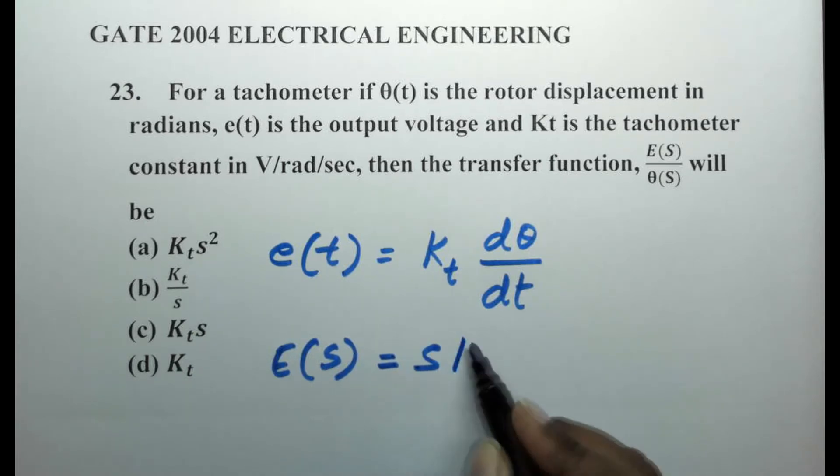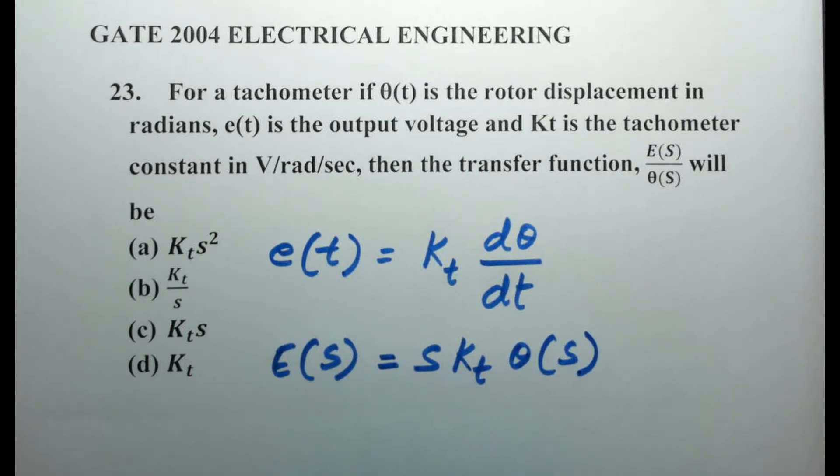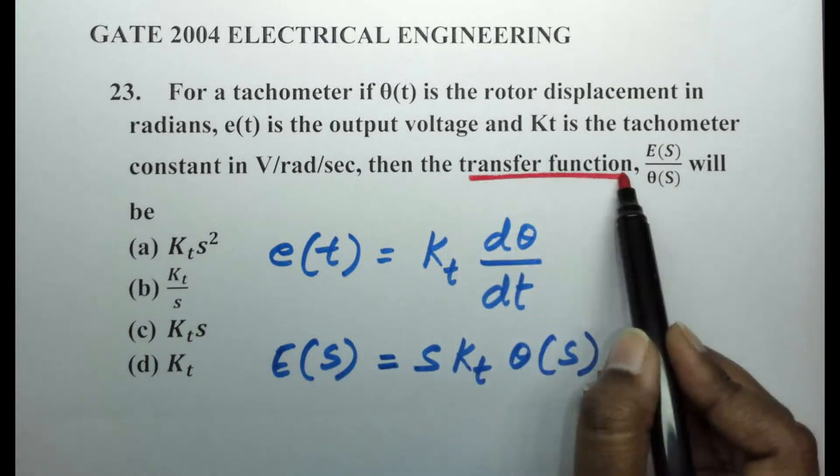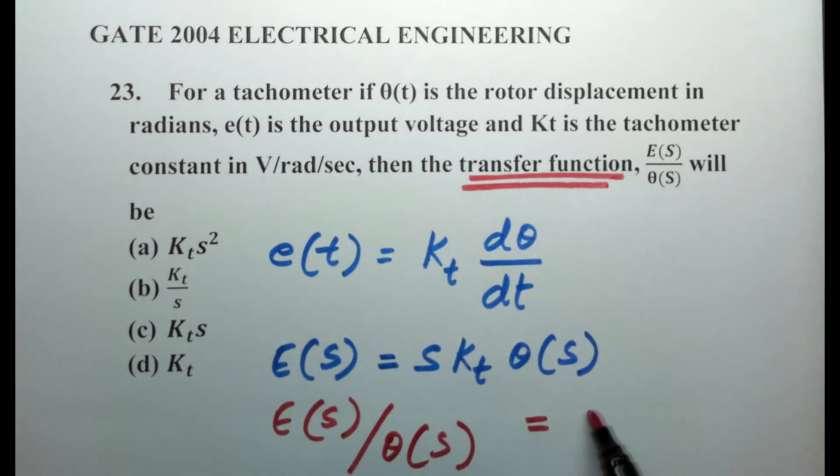Now the transfer function is in terms of e of s by theta of s. So this can be further written as e of s divided by theta of s. What is left out? s into kt. Now check where does this option come under.